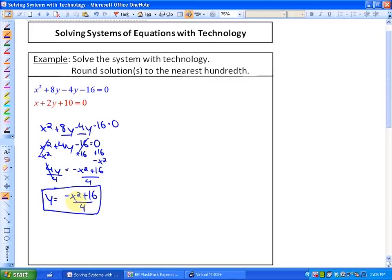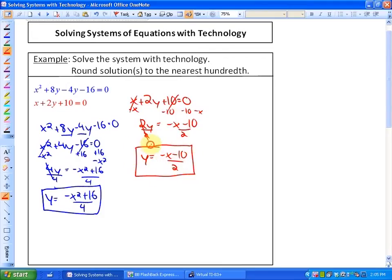For our red function we have x plus 2y plus 10 equals 0. If I isolate y by subtracting 10 and subtracting x, I have 2y equals negative x minus 10. After I divide by 2, I have y equals negative x minus 10 all over 2. We do not have to put this into slope intercept form; we can just leave it as long as y is isolated.